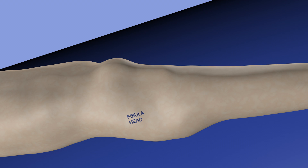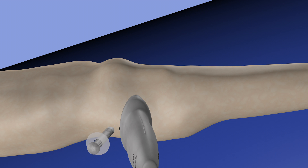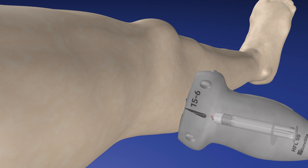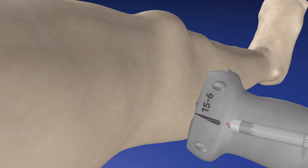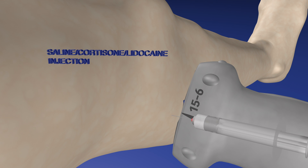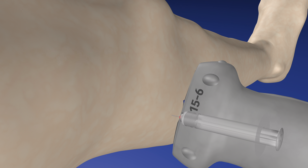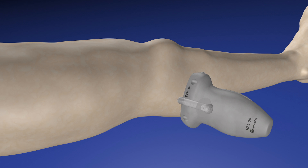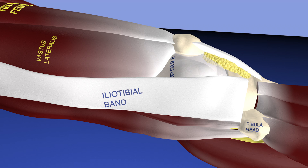Here's a gross view of the leg with the probe in an axial orientation on the lateral aspect. The syringe is going straight into the body right around the common peroneal nerve, and we're injecting a combination of saline, cortisone, and lidocaine. That is essentially the procedure in a gross depiction.